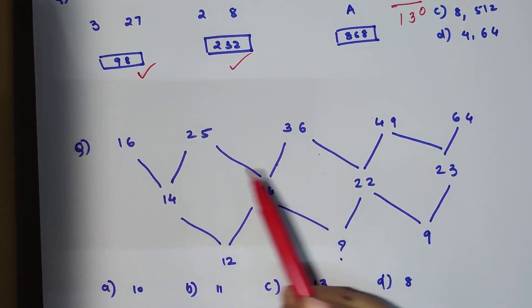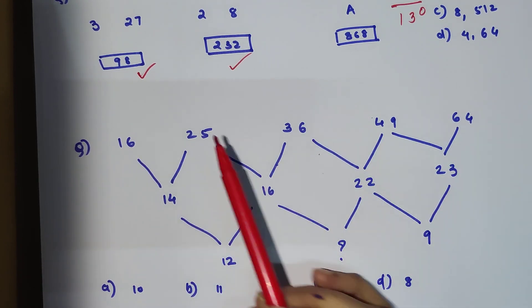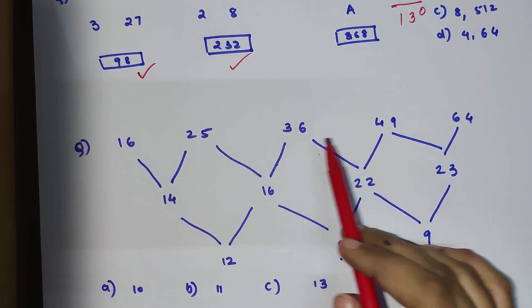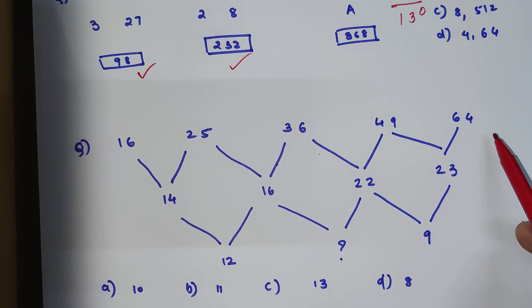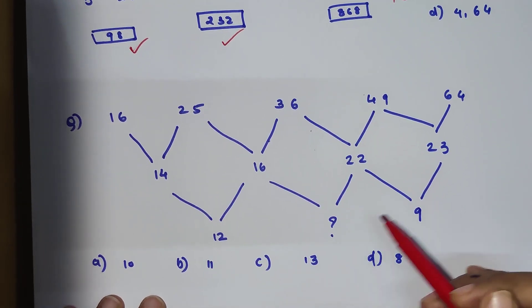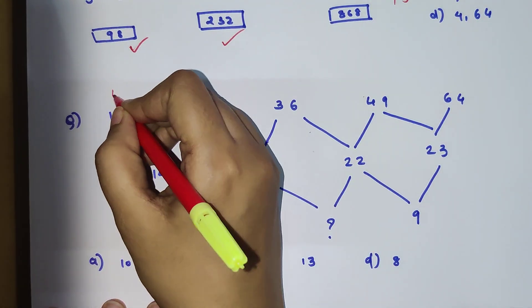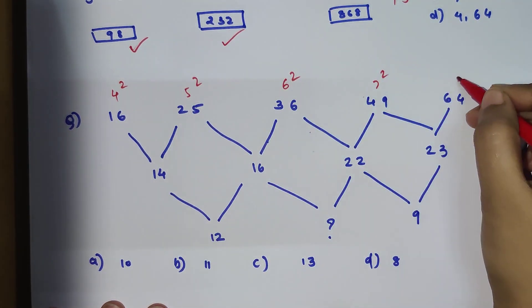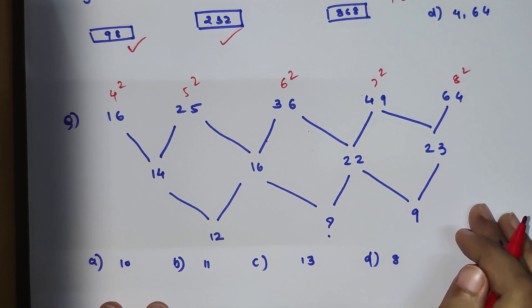Here the question is 16, 25, 36, 49, 64. Combination of these is getting you 14, combination of these two is getting you 16, combination of these two is getting you 22, then combination of these two is getting you 23. Moving on, there is a combination getting you 12, combination of these two getting you something we need to figure out, and then combination of 22 and 23 gets you 9. We know this is like 4 square, 5 square, 6 square, 7 square and 8 square. Now here, see, understand, this is looking a bit difficult.